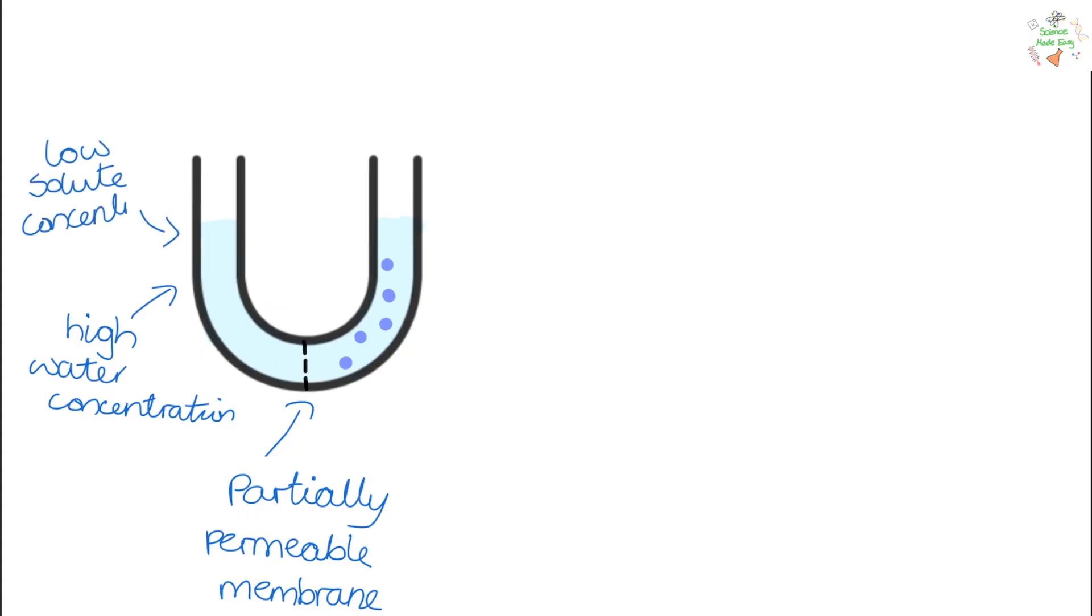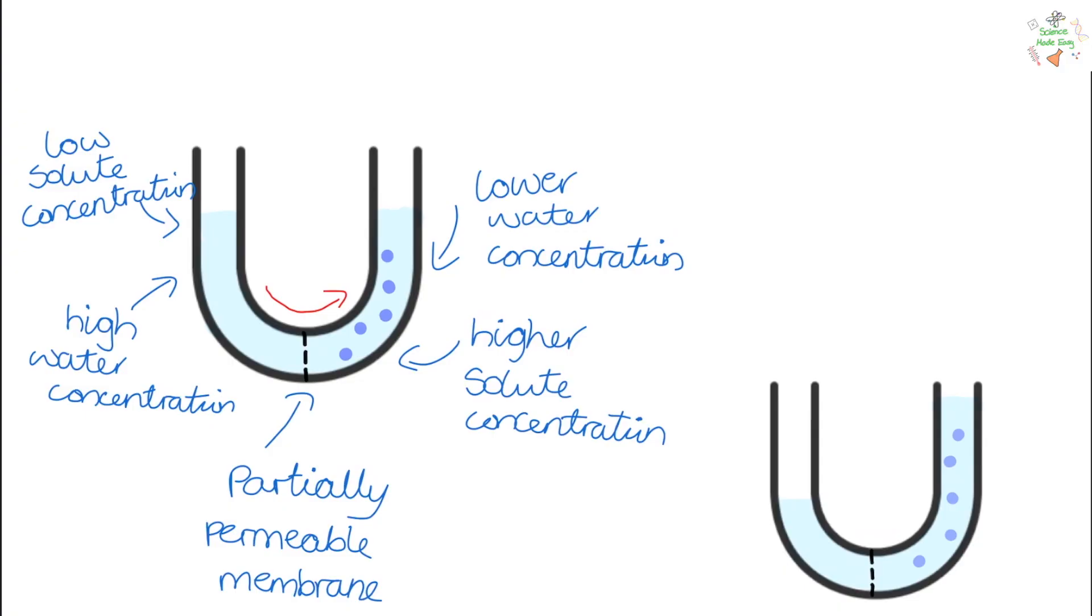So in this diagram we have a partially permeable membrane. On this side we have a higher water concentration but a low solute concentration. The solute are the darker blue dots inside the solution. On this side we have a lower water concentration but a higher solute concentration. So this basically means on one side there's more water but less solute, and on the other side there's more solute but less water. So osmosis means that the water will travel from a high concentration to a low concentration through a partially permeable membrane. So it's almost like it tries to balance out the concentration of water.